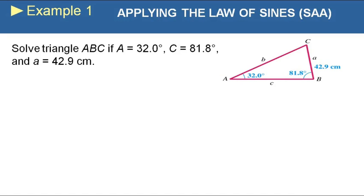Here is our first example. We're going to solve triangle ABC if A equals 32 degrees and C equals 81.8 degrees and side A equals 42.9 centimeters. The easiest thing to do actually first is to find angle B because we don't need any special laws for that. We can just subtract from 180. So it looks like B is 66.2 degrees.